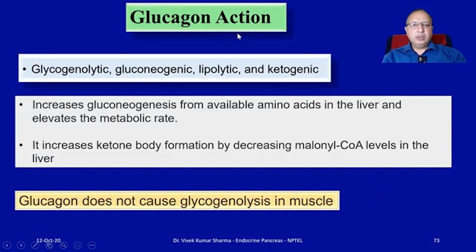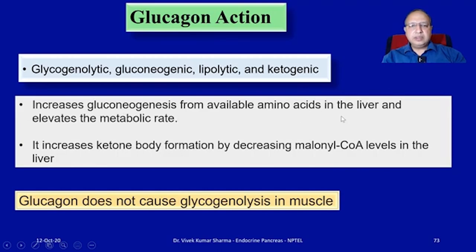The major actions of glucagon are counter-regulatory to those of insulin — it enhances blood glucose level. It promotes glycogenolysis, gluconeogenesis, lipolysis, and ketogenesis. Importantly, glucagon does not cause glycogenolysis in the muscle.